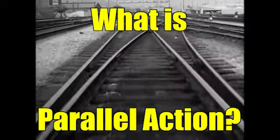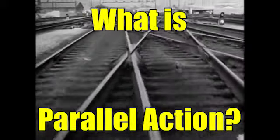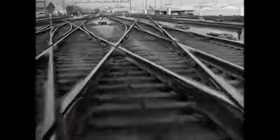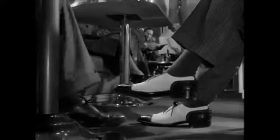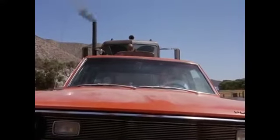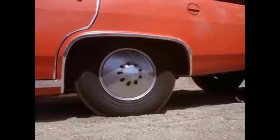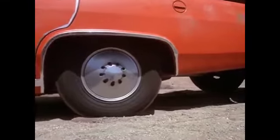Parallel action is where the film cuts between two or more different stories that are related. We'd usually expect the scenes to be happening at the same time and in the same place. In Steven Spielberg's Duel, for example, the two stories are happening right next to each other. One story is the train passing through the level crossing, the other story is the truck forcing the car onto the tracks.